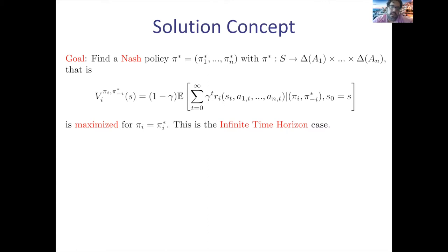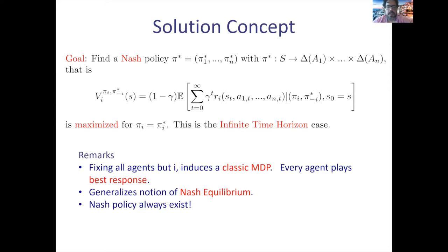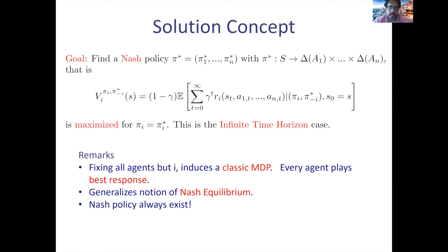Essentially, if you fix the n−1 agents and allow agent i to change his policy, he should play best response. Every player should play best response, fixing the remaining n−1 agents. It can be shown — as with Nash equilibrium — that for infinite time horizon with discount factor gamma and for finite time horizon stochastic games, Nash policies always exist. This is an interesting solution concept with the universality of existence.